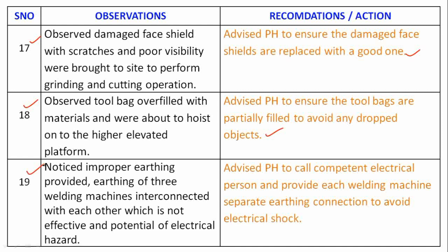Observation 19: Noticed improper earthing provided for three welding machines interconnected with each other, which is not effective and has potential for electrical hazard. Recommendation: Advise the permit holder to call a competent electrical person and provide each welding machine with separate earthing connections to avoid electrical shock.